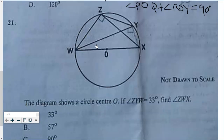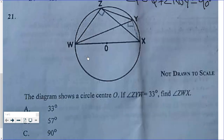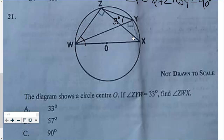Then the last one over here — we have to find angle ZWX, which is this whole angle over here. We are given that angle ZYW is 33 degrees. Now angle ZYW is sitting on chord WZ, and WZ subtends another angle on the circumference. So angles in the same segment are equal, meaning this angle is also 33 degrees.